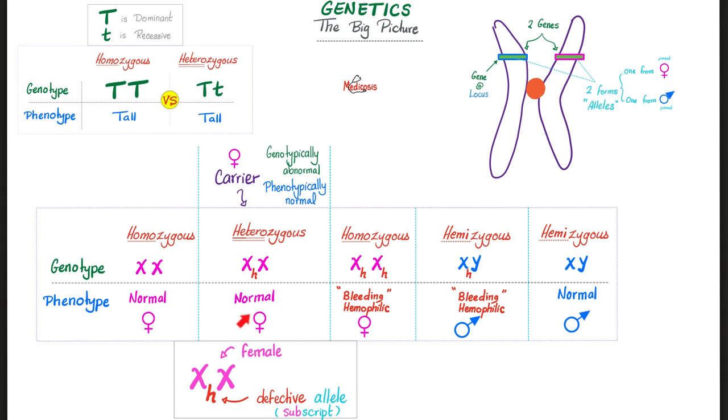Genotypically abnormal, phenotypically normal. This is the carrier. Next, X sub H, X sub H. Homozygous, that's true. Female, that's true. Both are affected. That's why she'll bleed. She has hemophilia.